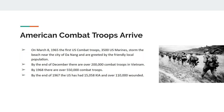By the end of December, troop numbers go from 3,500 Marines up to 200,000 combat troops, and by 1968 there are over half a million combat troops in Vietnam. South Korea is also involved with several hundred thousand troops there as well. By the end of 1967, the United States has over 15,000 killed and over 110,000 wounded soldiers.